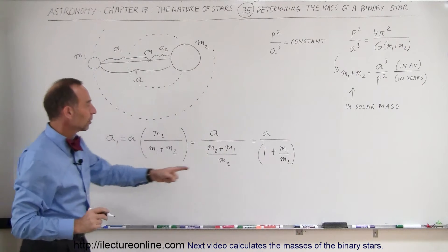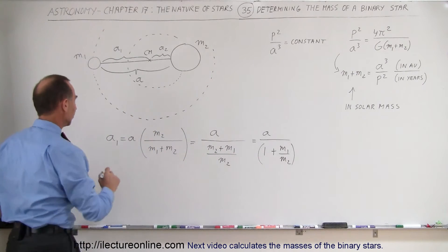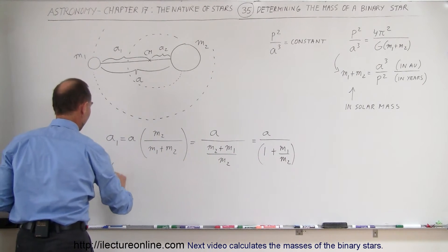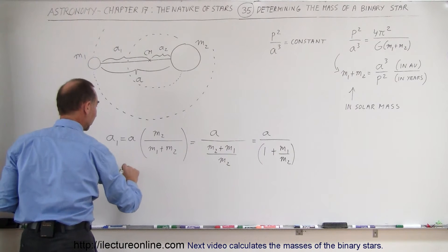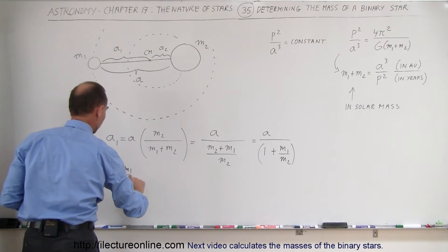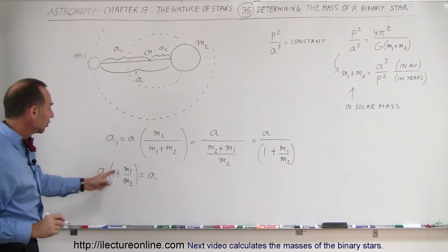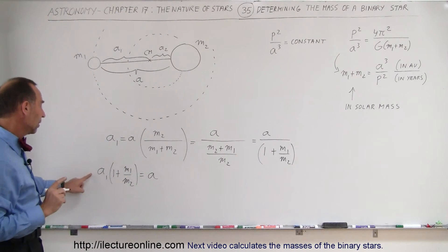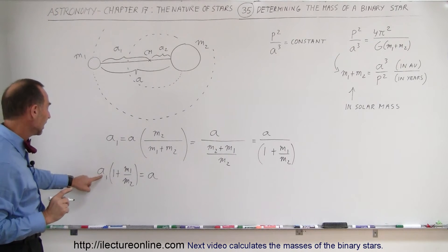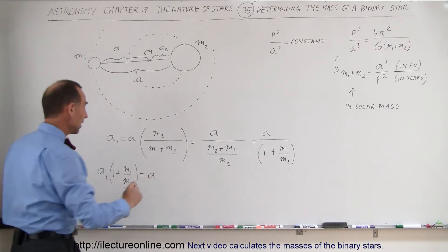So what we're going to do now is we're going to multiply this times this. So now we have A1 times the quantity 1 plus M1 over M2 that equals A. And then if we multiply this through, or actually a better thing to do would be to go ahead and take the A1 and bring it down here.